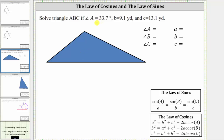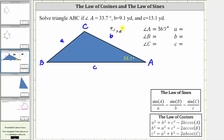Because angle A is an acute angle of 33.7 degrees, let's label this angle A, which means the opposite side must be side A. Let's label this angle B, and therefore this is side B. And let's label this angle C, and therefore the opposite side here must be side C. Now let's label the known information: angle A is 33.7 degrees, side B is 9.1 yards, and side C is 13.1 yards. Let's also record this in the table.